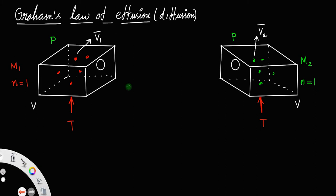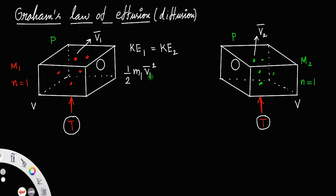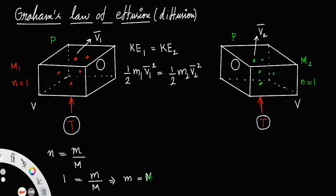Since the temperature remains the same for both boxes, the kinetic energy of molecules in the first box equals the kinetic energy of molecules in the second box. Since temperature is the measure of kinetic energy, same temperature means same kinetic energy. That is, half m1 v1 bar squared is equal to half m2 v2 bar squared. Now, number of moles n equals given mass divided by molecular mass. If number of moles equals 1, then given mass equals molecular mass, which means the given mass m1 is the molecular mass of the first gas, and the given mass of the second gas is its molecular mass m2.